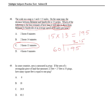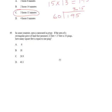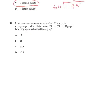Equally simple is 49. Let me scroll that up just a bit. It confuses some people, but really unnecessarily. It says, in some countries, area is measured in pings. If the area of a rectangular piece of land that measures 22 by 27 feet is 33 pings, how many square feet is equal to one ping?